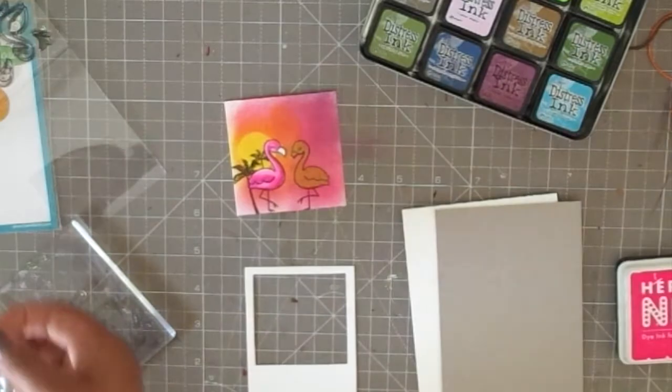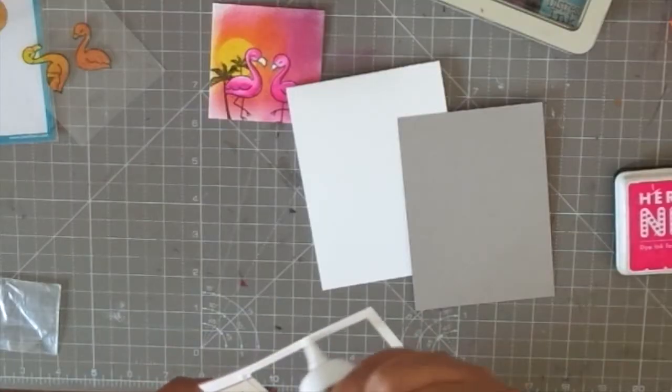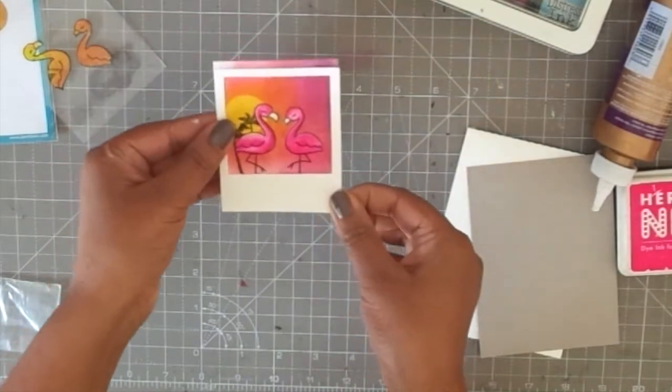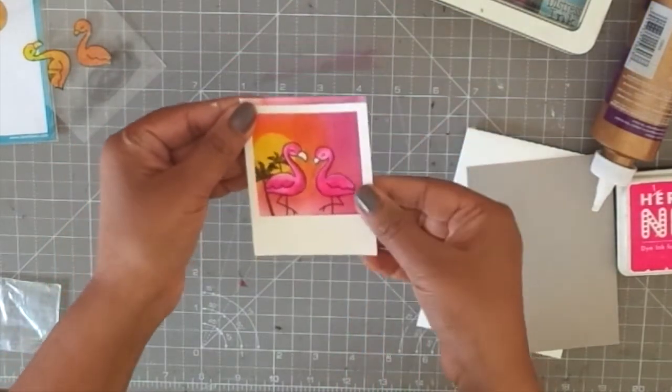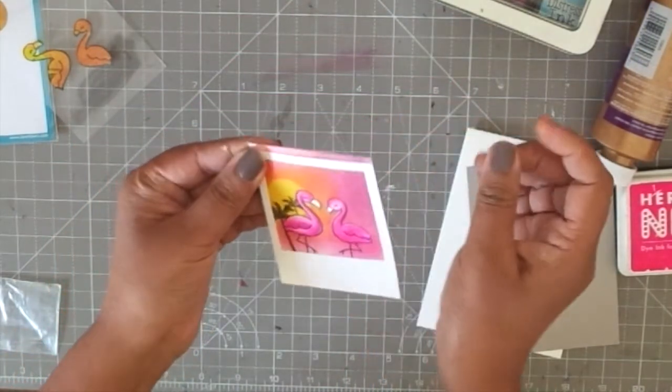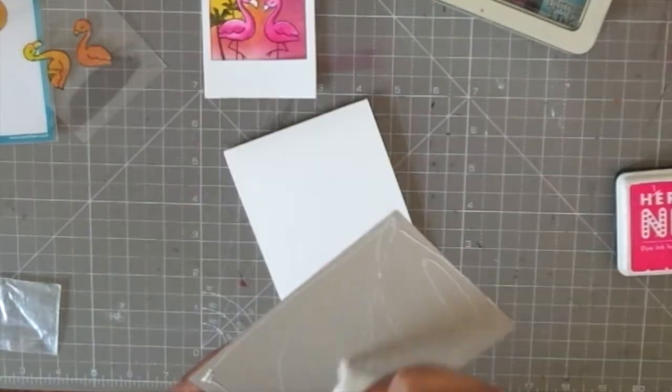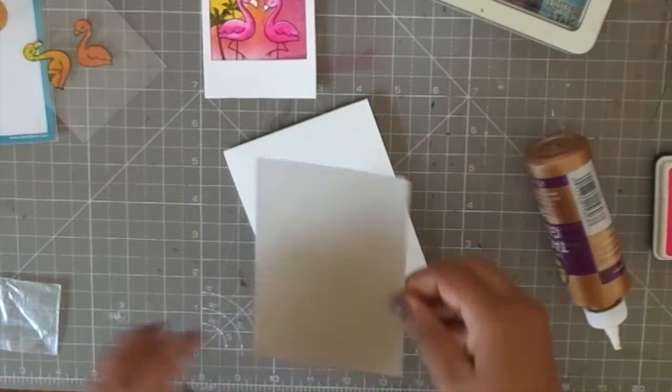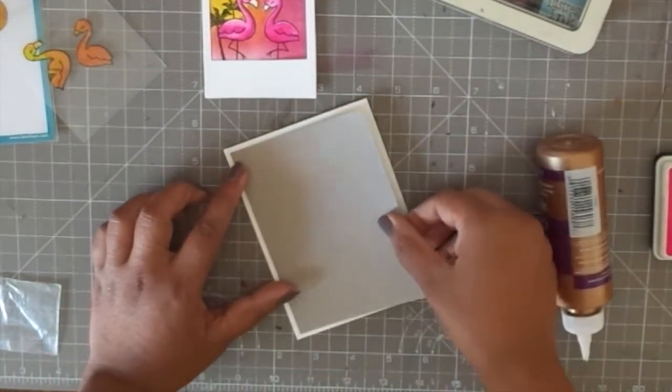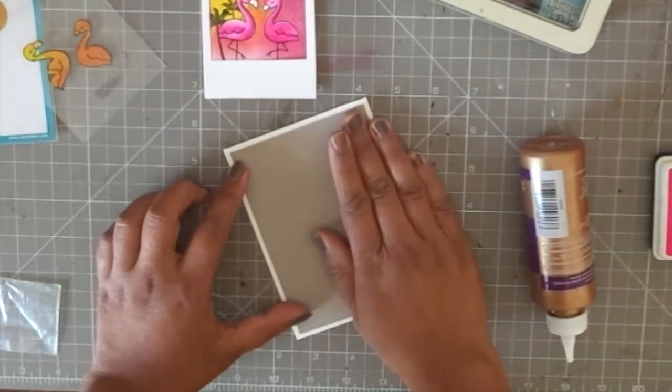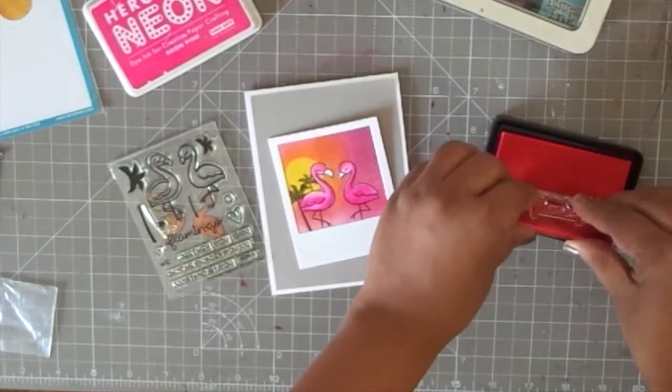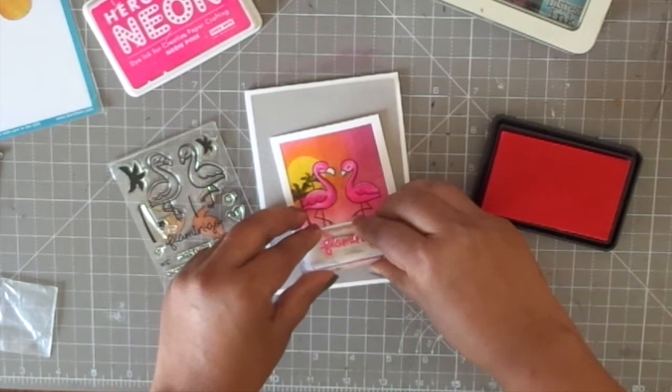Now I have something more to the background and now we are going to assemble the card. I'm going to stick the Polaroid frame to the scene that we have created here and trim down any excess that I might have. You can see I have some excess on the top, I'll trim that down and I will also add the little mat that I created for the card base. This gray will contrast all the white and the color that's going on there.